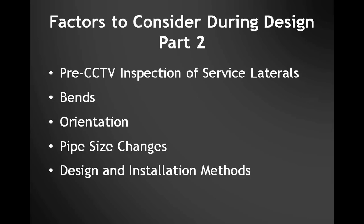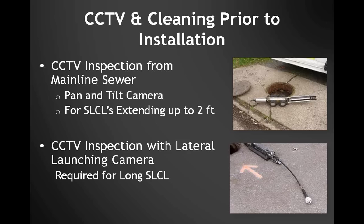Additional factors to consider during design include the TV inspection extent, whether there are bends, the orientation of the lateral at the main, pipe size changes within the service lateral, and the design and installation methods. All services must be televised so you can see what you're going to line into. If you've recommended a liner extending just a foot or two, a simple pan and tilt camera suffices, but if extending further — say ten feet or to the property line — you need a lateral launching camera. Not all service lateral liners can navigate bends, and attempting installation where bends exist can result in wrinkles or blockages. Understanding the geometry of your system is an important thing to note.